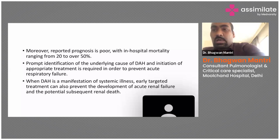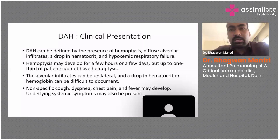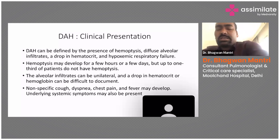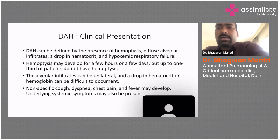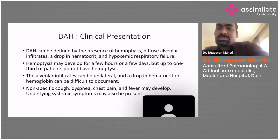Focusing on clinical presentation — how these patients present to us: any patient with DAH comes with hemoptysis, hypoxemic respiratory failure, and a drop in hemoglobin. We can remember these as a mnemonic: DAH stands for D for Dyspnea, A for Anemia, and H for Hemoptysis. The patient will present with breathing difficulty, a drop in hemoglobin, and hemoptysis as a complaint.